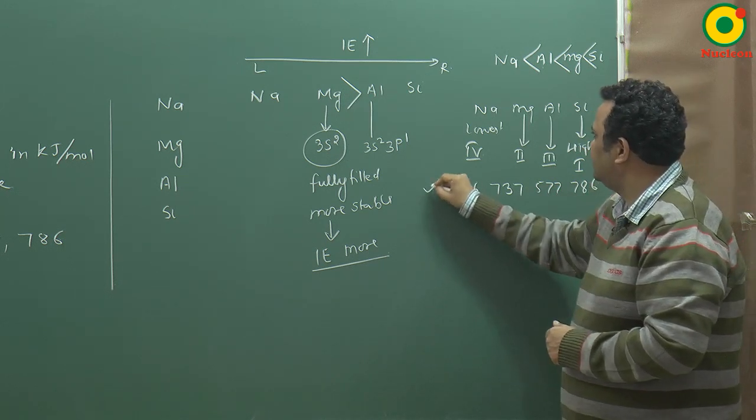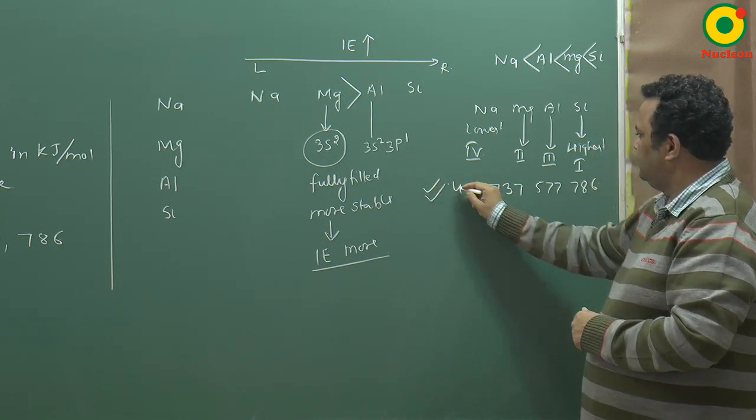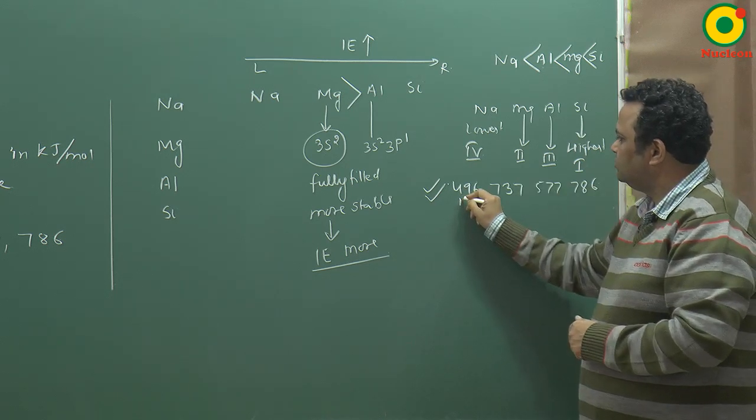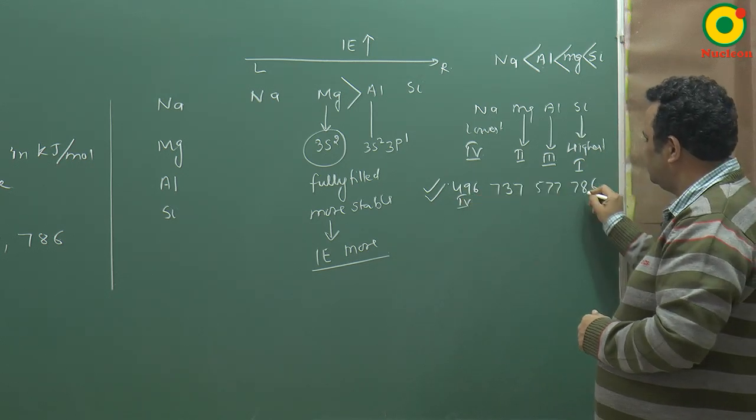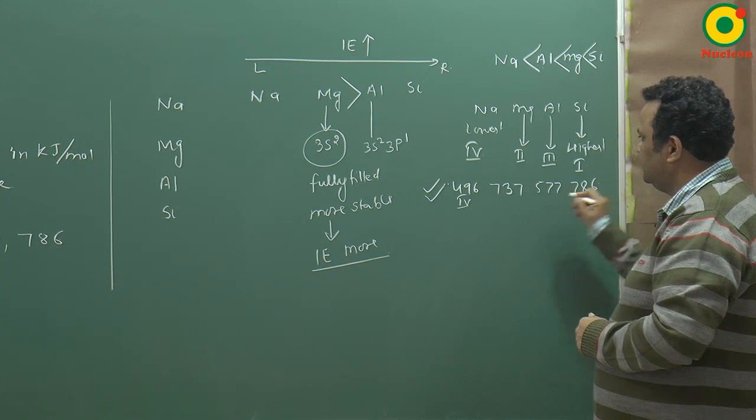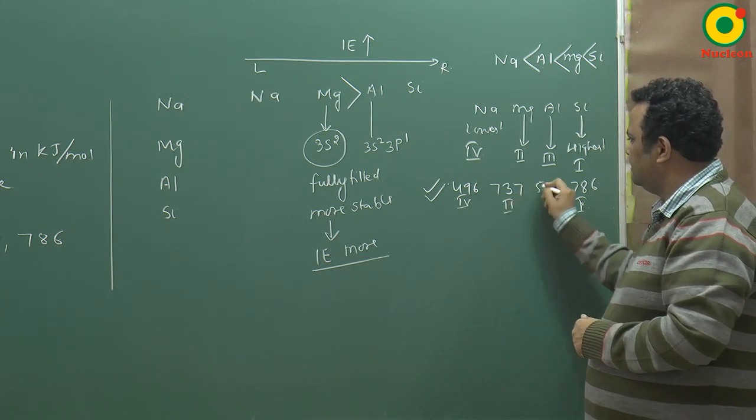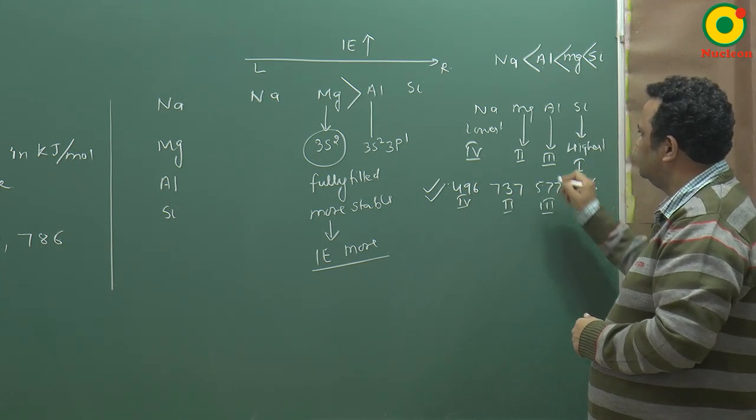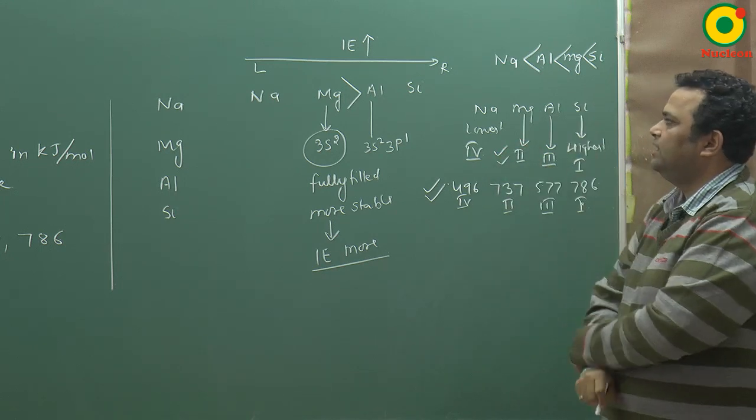So this is the order. Because if I see the order in this order, this is lowest fourth, this is highest first, this is second highest second and third highest third, so this order is the right order.